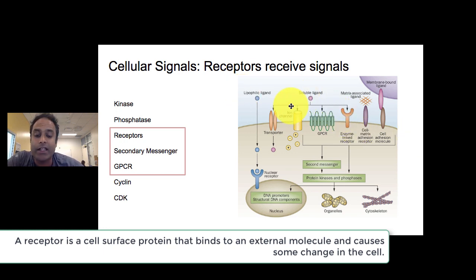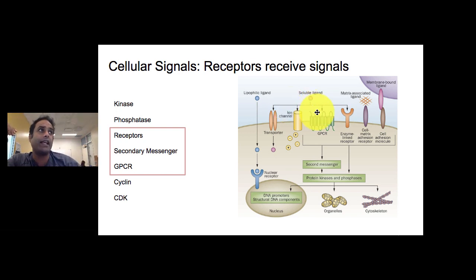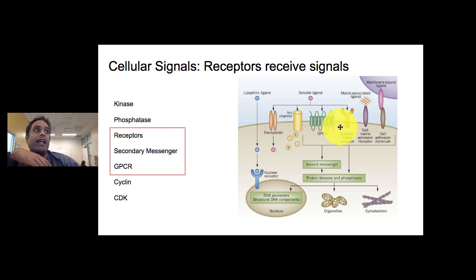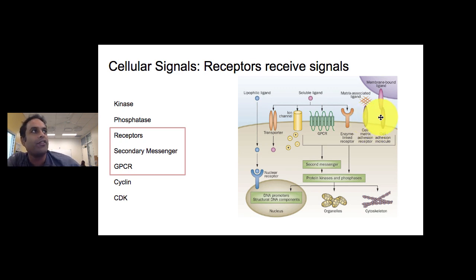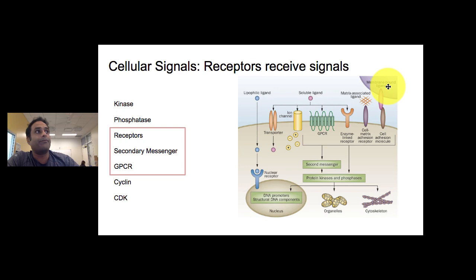There are many different types of receptors. There's the transporter, where something binds to a channel and lets something in or comes in itself. There's an enzyme-linked receptor, a GPCR, and two other slightly stranger types. Some receptors allow the cell to bind to other things — this receptor allows the cell to bind to another cell, which will be super important in metastasis, since for a cell to split off and go away it must become unsticky.